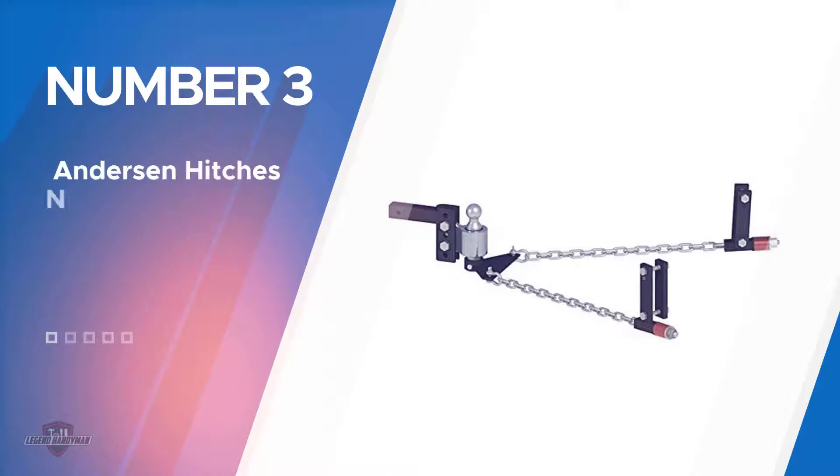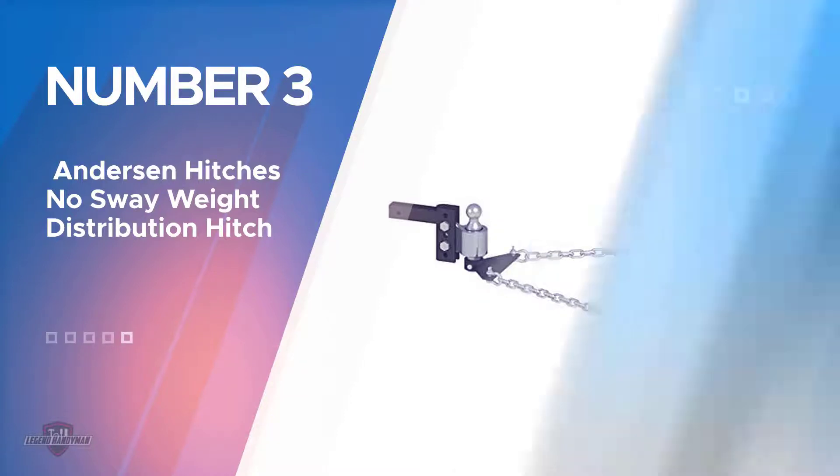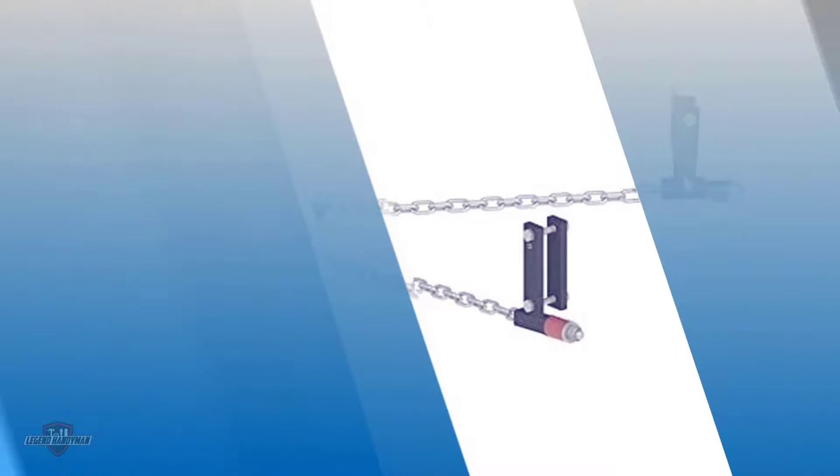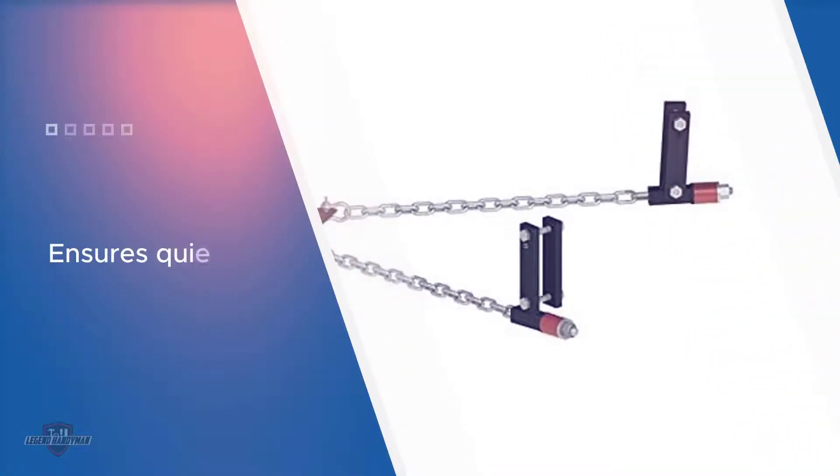Number three: Anderson hitches no sway weight distribution hitch. The no sway weight distribution hitch from Anderson hitches is one of the best weight distribution hitches on sale today. This hitch differs from others that are of the round bar and trunnion bar type. It features chains and a damper in place of spring bars, which not only remedies trailer sway but also any trailer bouncing you may experience.